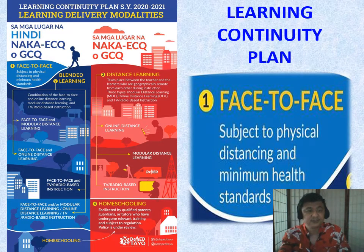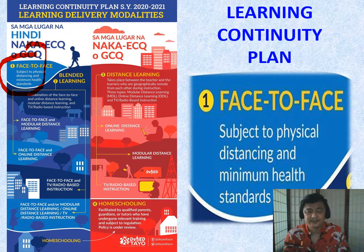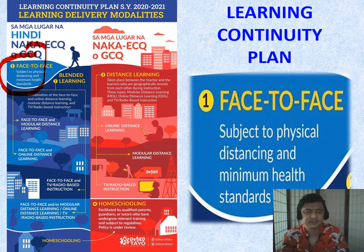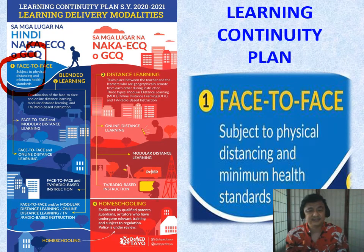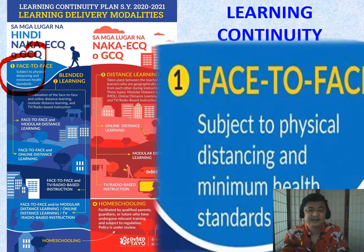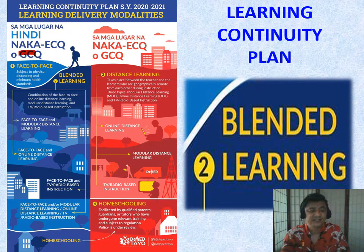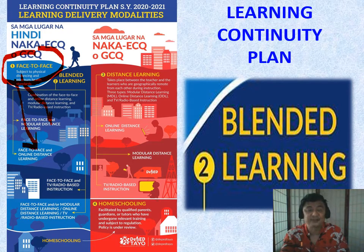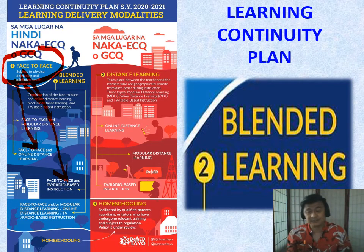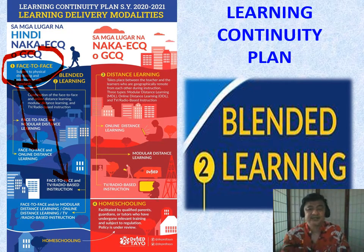If your area is not under ECQ, you can do pure face-to-face — like regular class. If social distancing makes full classrooms impossible, we move to blended learning, which mixes face-to-face with modules, online devices, internet, or radio and TV. Half the class does face-to-face while the other half is online — the school or district makes the schedule. That's blended learning.